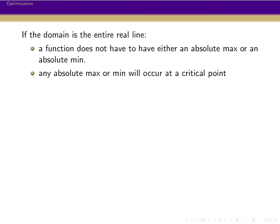If a function does have an absolute max or min, then that is going to occur at a critical point of the function. A critical point — remember, this is what we talked about in the last video — is some place where the first derivative is equal to zero, so the function is horizontal, or the first derivative doesn't exist.